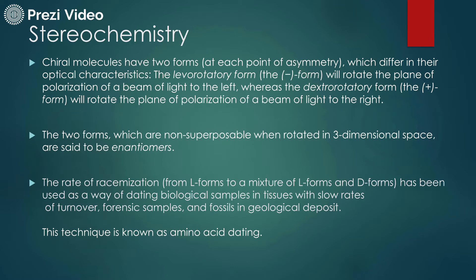In simple words, racemization is the conversion of one pure enantiomeric form to another. There are two forms: the levorotatory form, represented by the minus sign, which rotates the plane of polarization of light to the left; and the dextrorotatory form, where the plane of polarization of light is rotated to the right. The D form is represented by plus and the L form by minus.